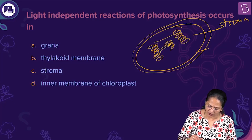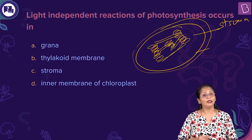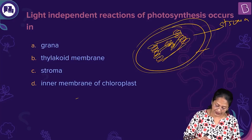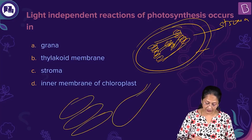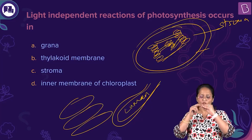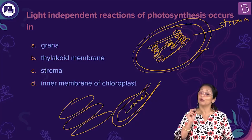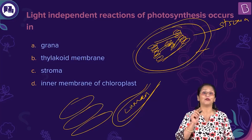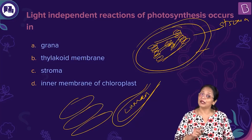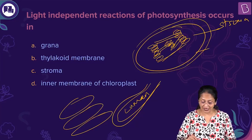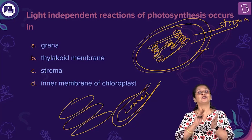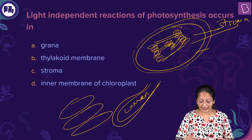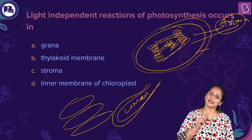In the stroma are stacks of coin-like structures called thylakoids, arranged in stacks called grana — singular is granum. These grana are interconnected by the fret membrane or stromal lamellae. Each thylakoid has a membrane with an internal space called the lumen. All the photosynthetic pigments are present in the membranes of the thylakoid — that is where the light-dependent reaction takes place. The light-independent reaction takes place in the stroma, where ATP is used to convert carbon dioxide into carbohydrate. You do not need light for this — that is why we call it the dark reaction.